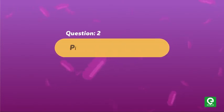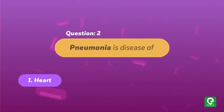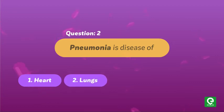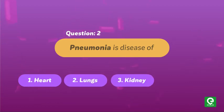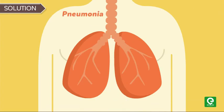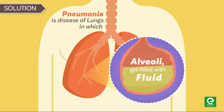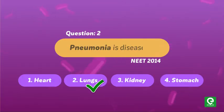Question 2: Pneumonia is a disease of — (1) Heart, (2) Lungs, (3) Kidney, or (4) Stomach. This question was asked in NEET 2014. Pneumonia is a disease of the lungs in which alveoli get filled with fluid, leading to severe problems in respiration. Hence, the correct answer is lungs.